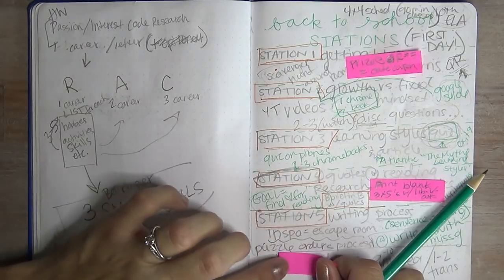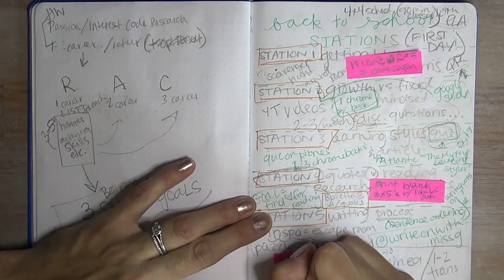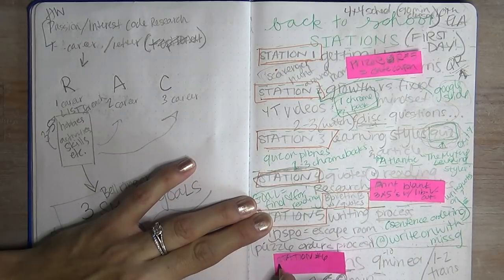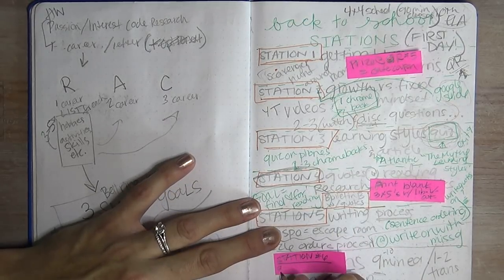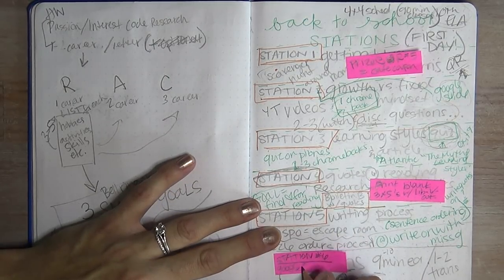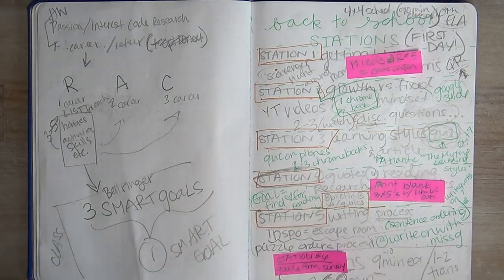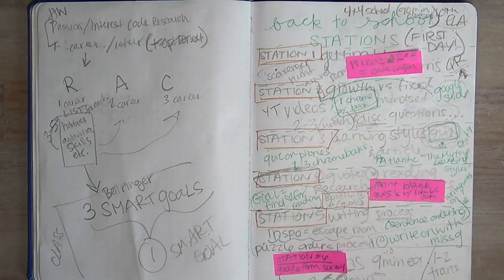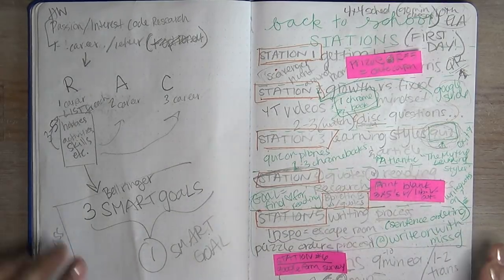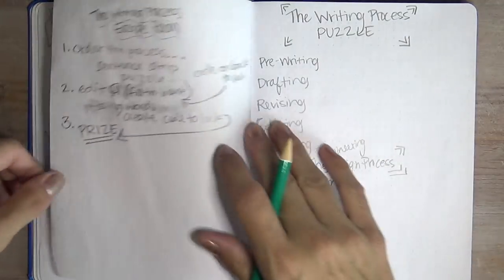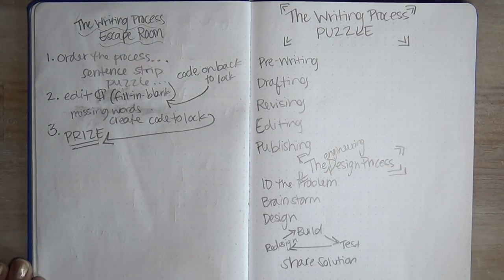Station number six is going to be a really easy one for the kids. It's going to be a Google form survey of their likes, their birthday, some information, some housekeeping stuff that I kind of need, but that's not what we're really talking about today.